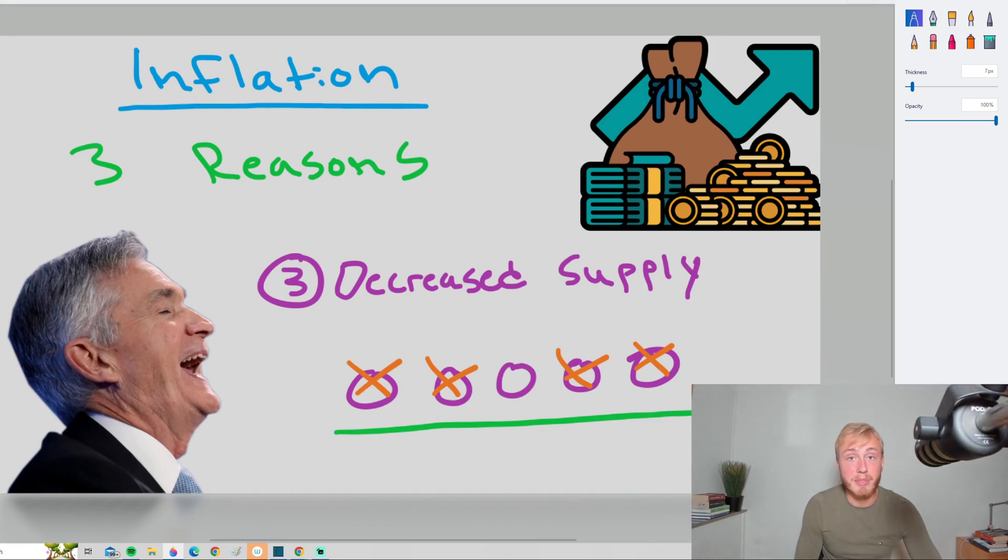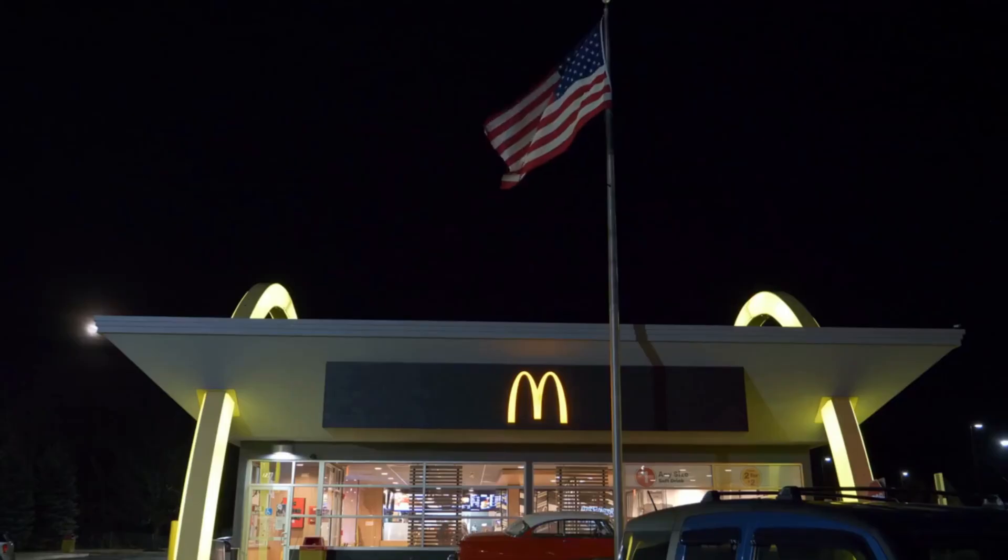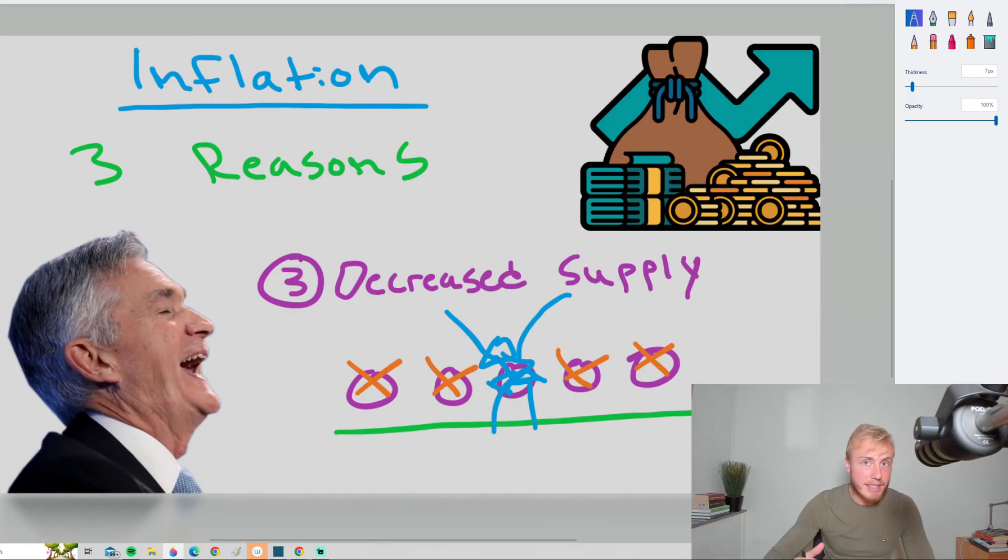The exact same thing that happened before will happen now because we have decreased supply. Everyone has to go to the one, the only McDonald's that is open. And this will yet again mean that they can increase the prices of the burgers because we still have the same demand. People want burgers, but we have lower supply, not as many McDonald's. So they can once again increase prices until people simply can't afford them anymore.